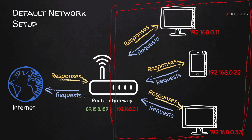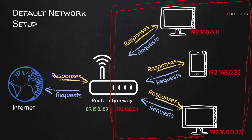The private IPs are only visible within the network — they're not visible throughout the internet. Only the public IP, the green one, is visible throughout the internet. Also, none of these devices actually have direct internet access; they can only access the internet through the router. So if this computer wanted to access google.com, it's going to send its request to the router, the router is going to go to the internet, get the response, and forward it back to the computer that requested it.